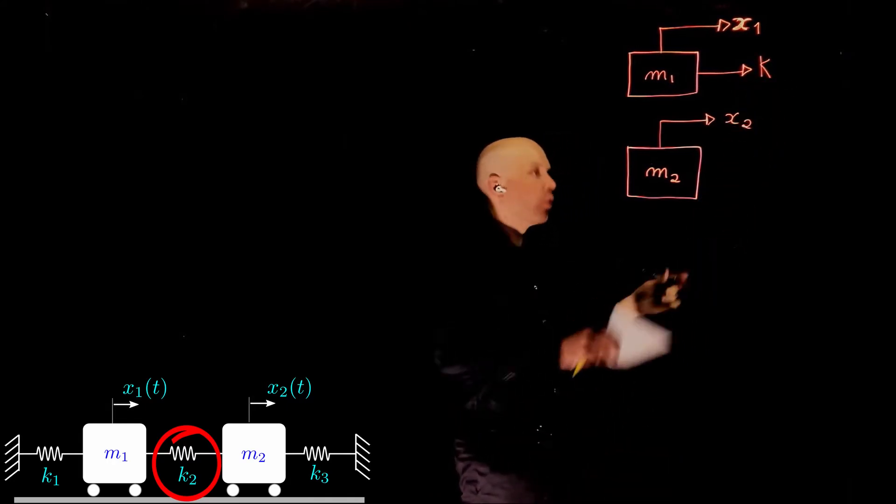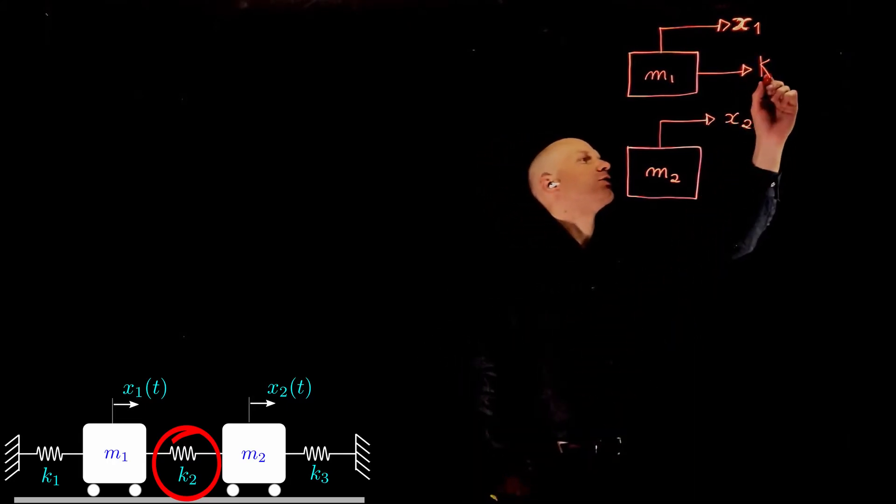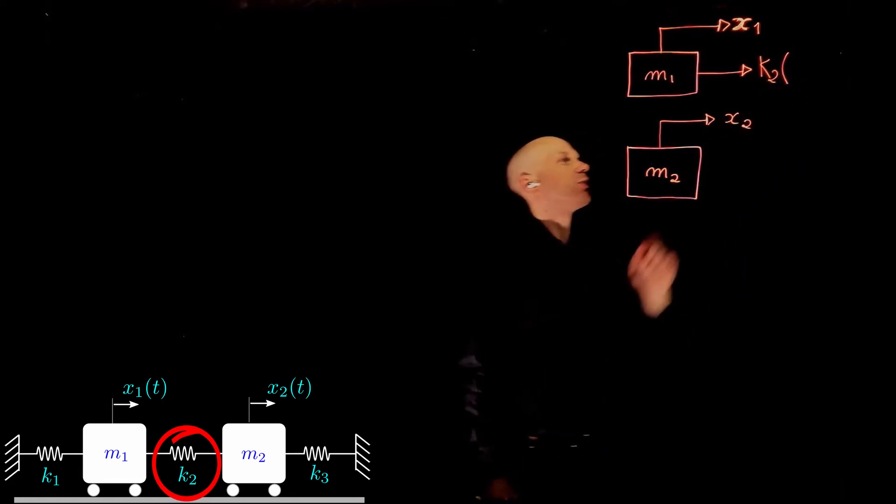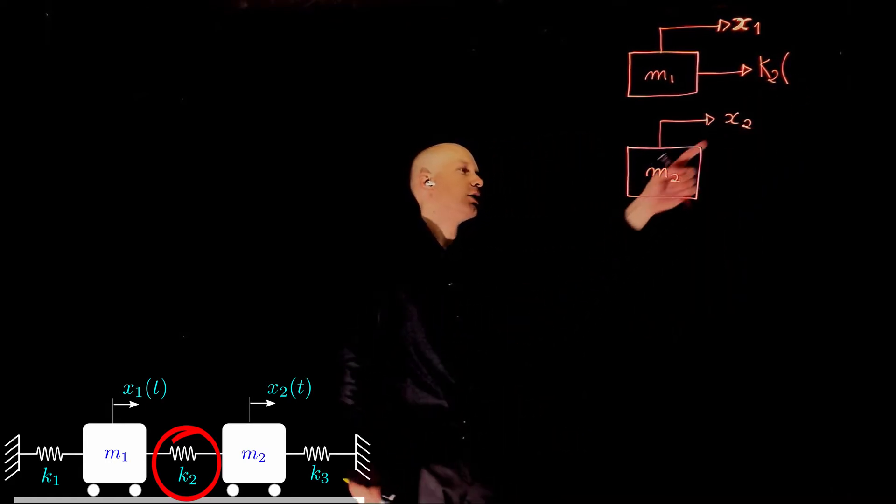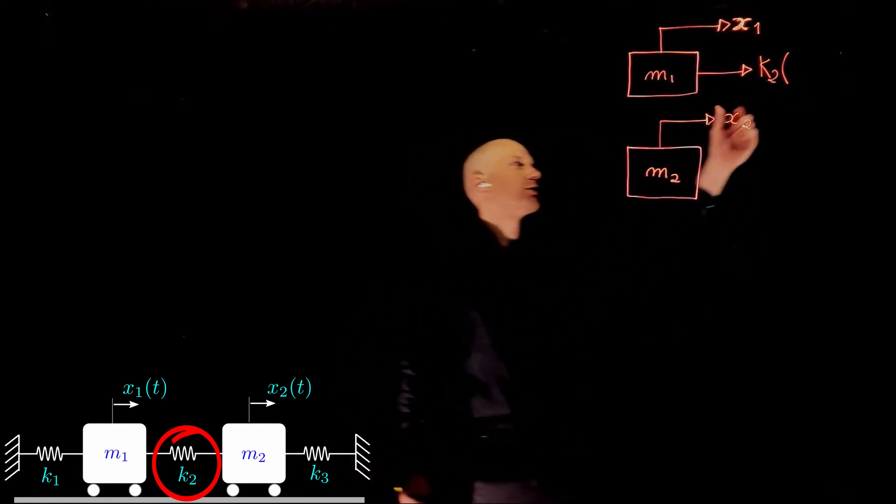And that is k1, k2. That is k2 times its relative displacement, which would be x2 minus x1.